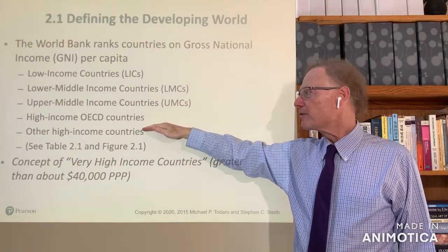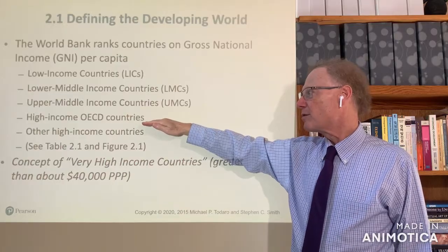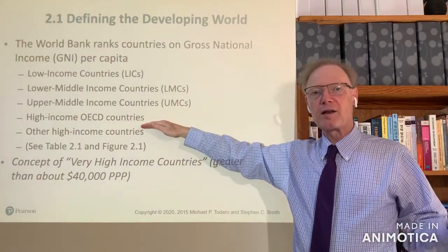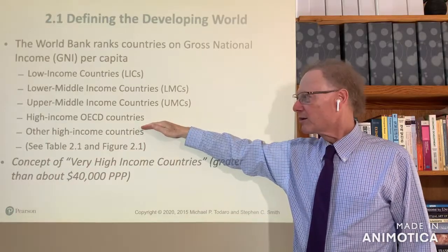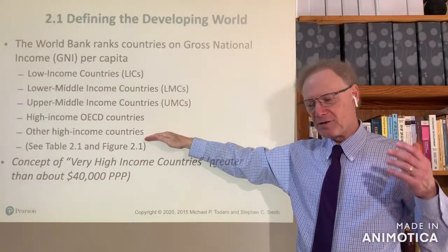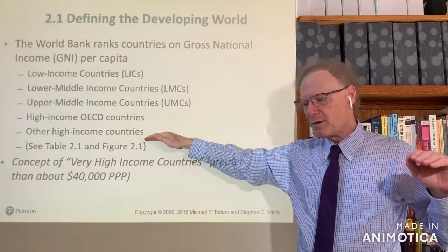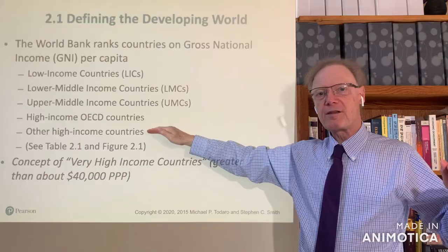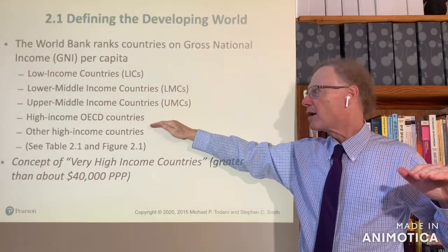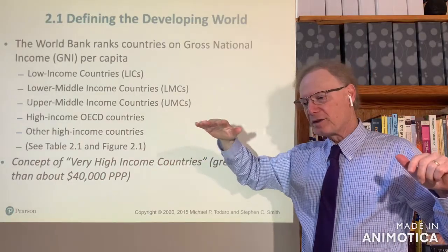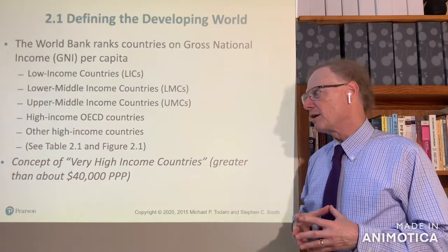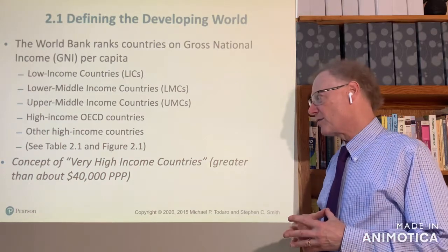High-income OECD countries tend to be the countries we think of as the developed, industrialized, rich world, and then other high-income countries. There are many other high-income countries in part because the threshold the World Bank sets for moving from upper-middle-income to high-income is just a little over $12,000, so not really very high in the global scheme of things.